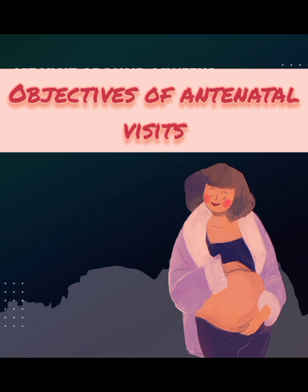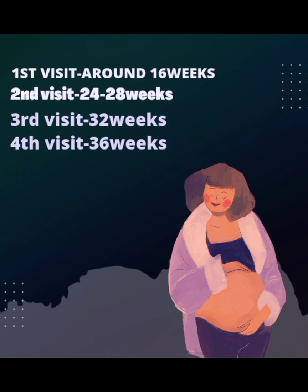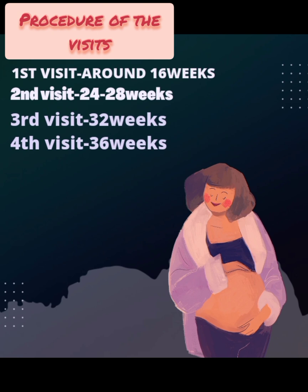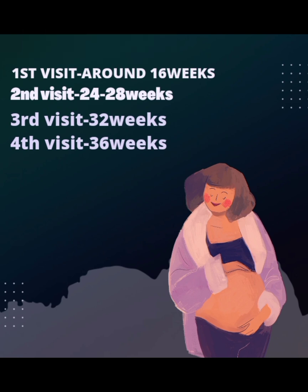Pregnancy should be regularly supervised through antenatal visits. The checkup is done at four-week intervals up to 28 weeks, then two-week intervals up to 36 weeks, and weekly thereafter until delivery. The first visit should be around 16 weeks, second visit at 24 to 28 weeks, third visit at 32 weeks, and the last visit at 36 weeks.